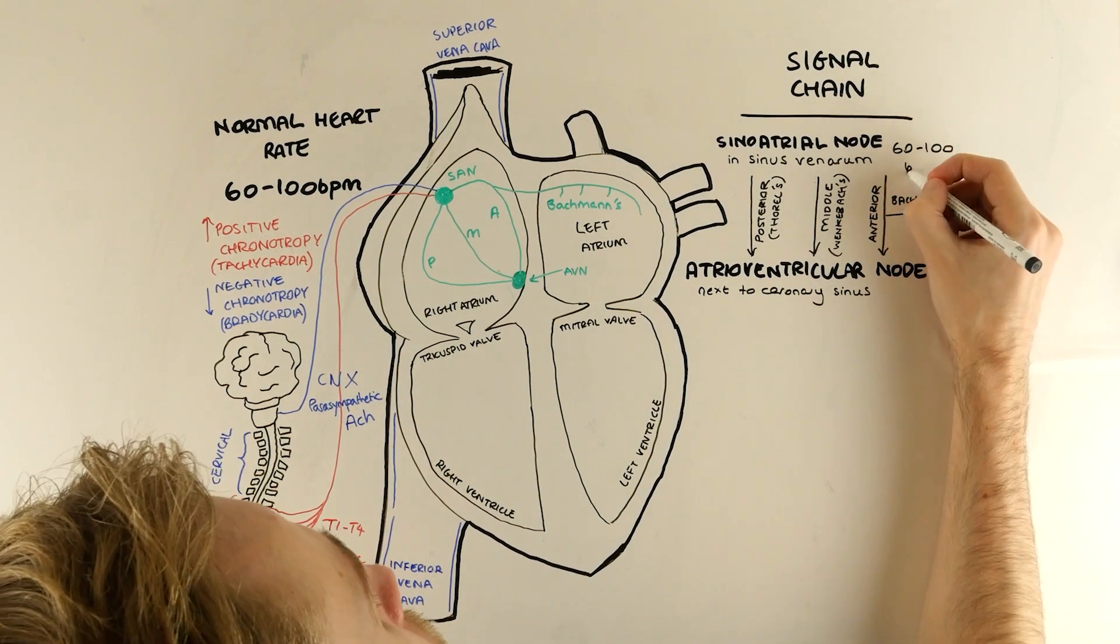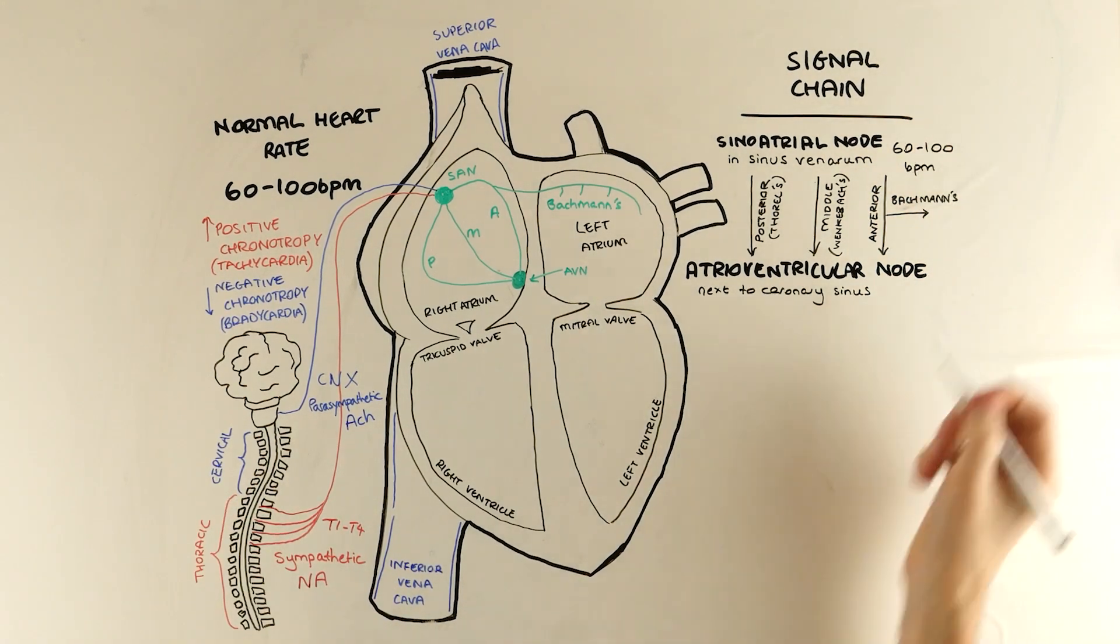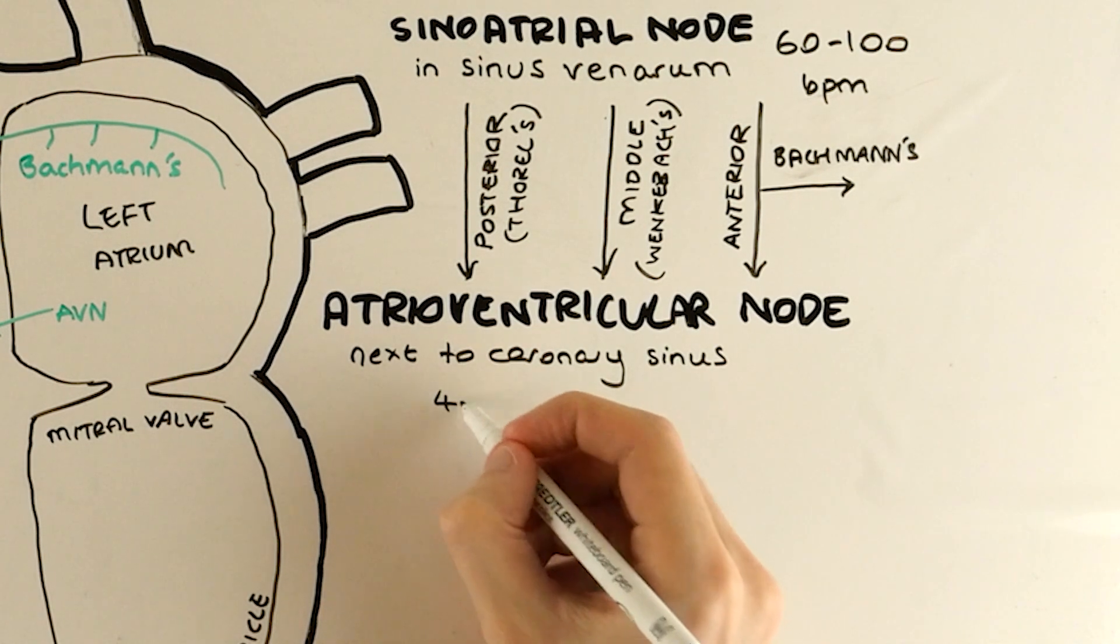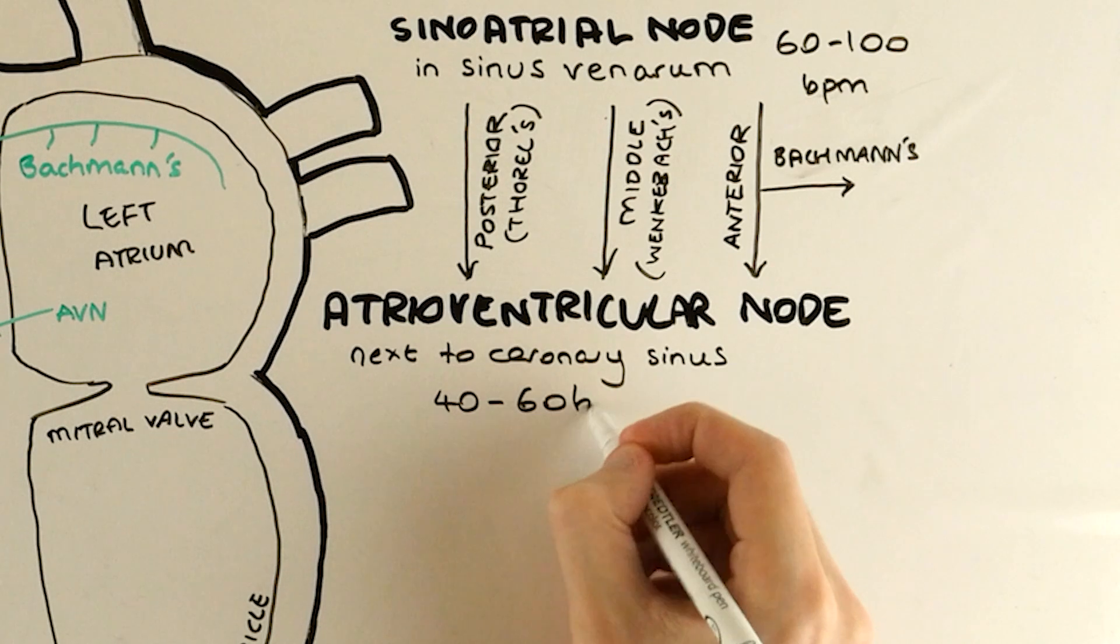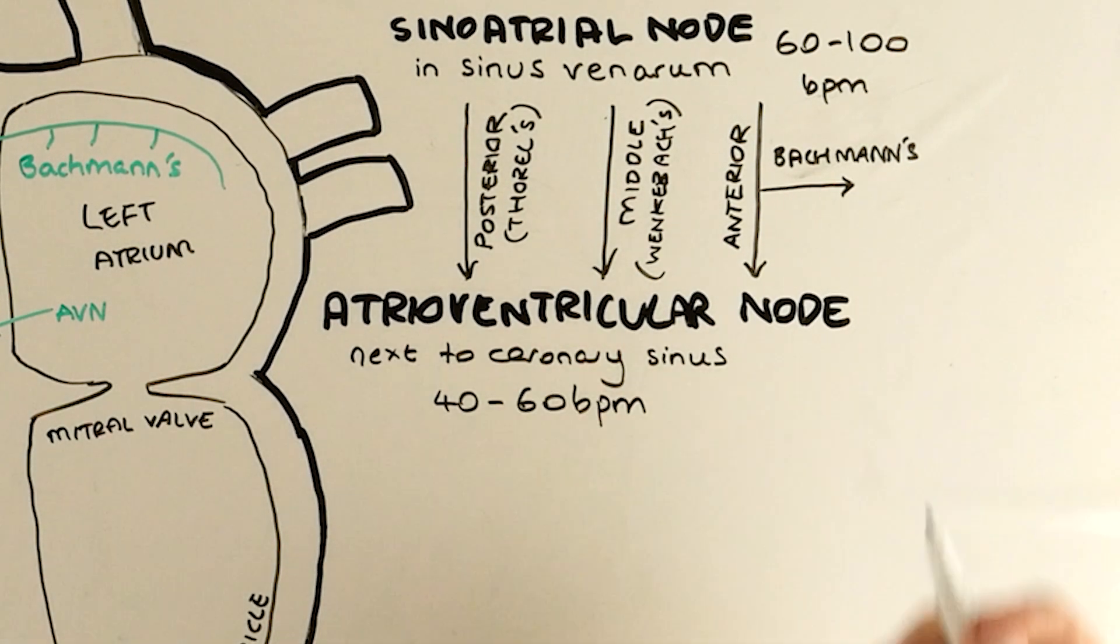You might find it interesting to know that if any of the conduction before the AVN isn't working properly, it can actually take over as the pacemaker for the heart, and will fire at 40 to 60 beats per minute, a bit slower than the SAN.